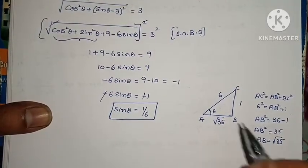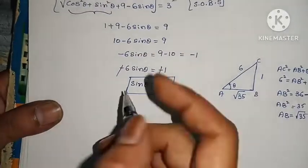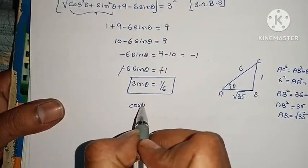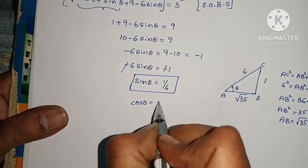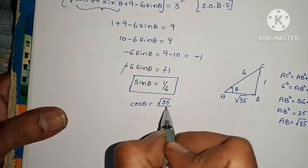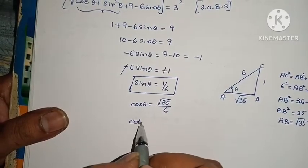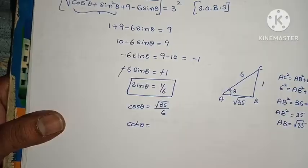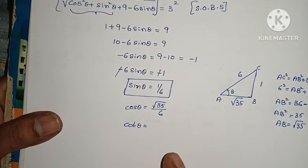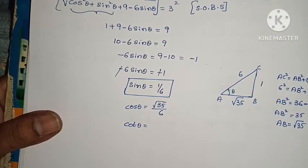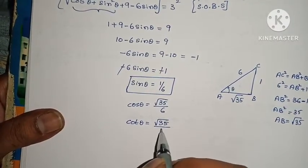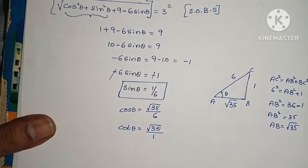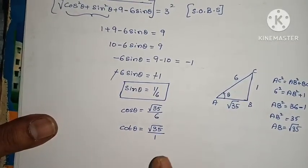So cosθ = adjacent/hypotenuse = √35/6. And cotθ = adjacent/opposite = √35/1 = √35. We now have sinθ = 1/6, cosθ = √35/6, and cotθ = √35.